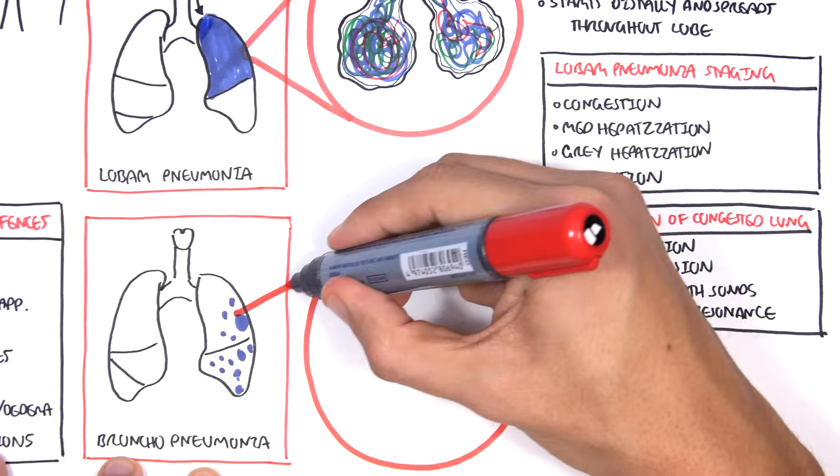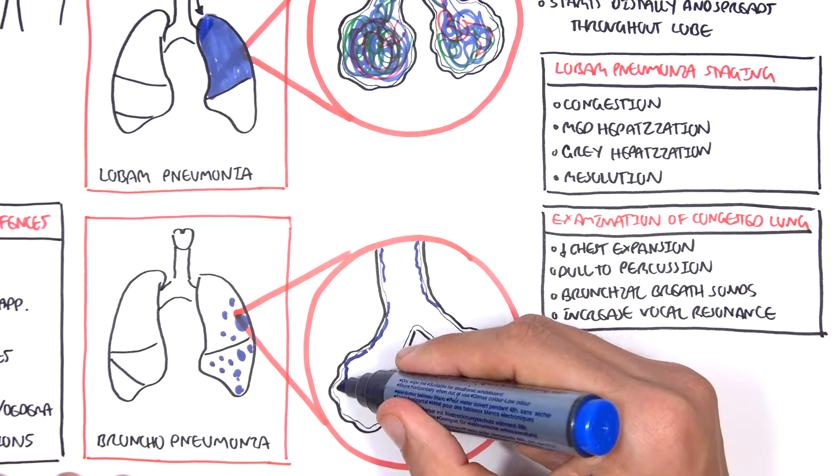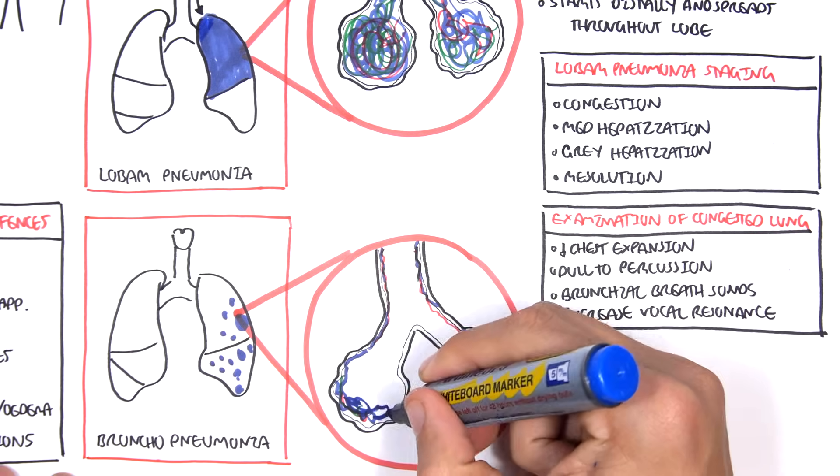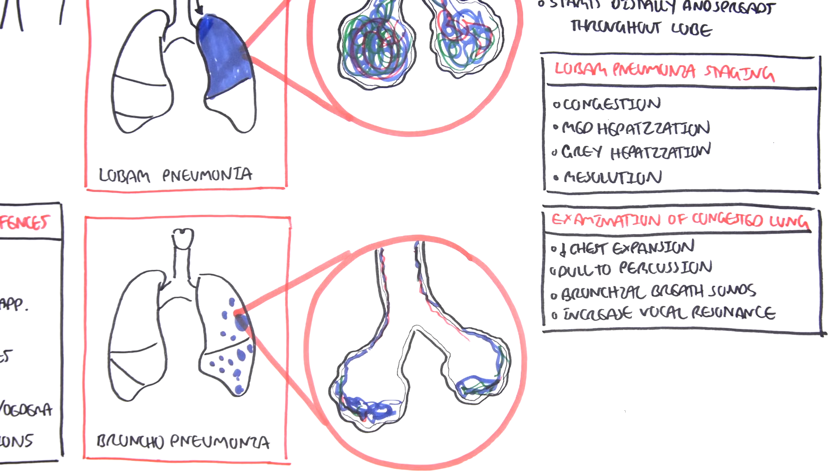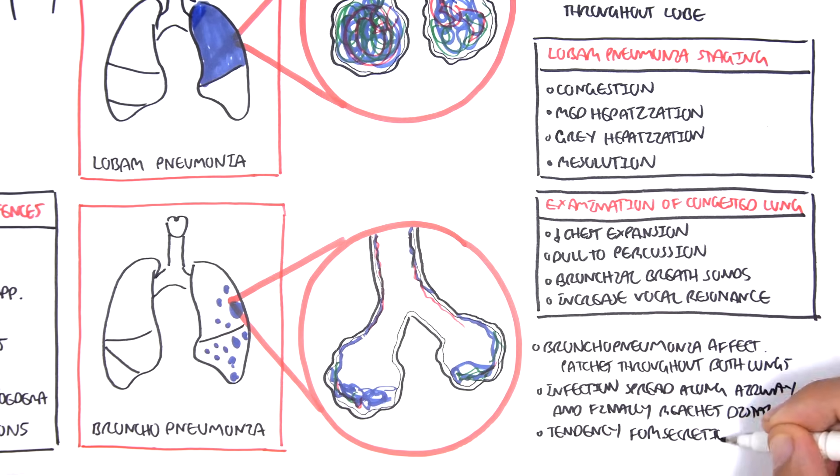Now let us look at bronchopneumonia. As we know, it affects patches throughout the lungs starting with the bronchioles. Hence the name bronchopneumonia. So the problem of congestion begins from the bronchioles and moves towards the alveoli. So whereas lobar pneumonia begins alveoli and moves proximally, bronchopneumonia begins proximally and then moves distally towards the alveoli. Bronchopneumonia affects patches throughout both lungs. Infections spread along airways and finally reaches distal areas. So that was looking at lobar pneumonia and bronchopneumonia, which are two types of pneumonia based on the areas of lung affected.